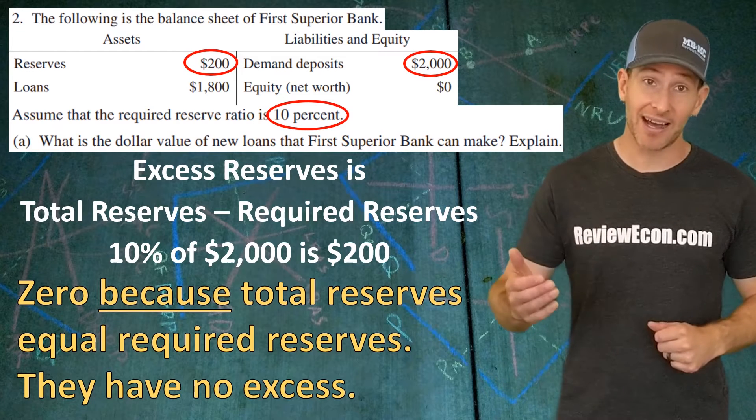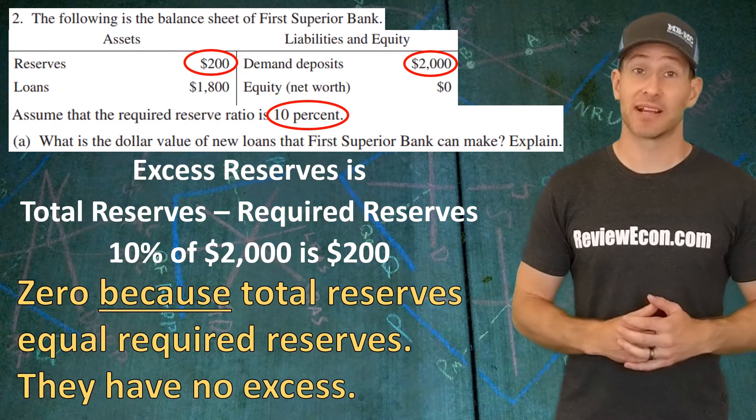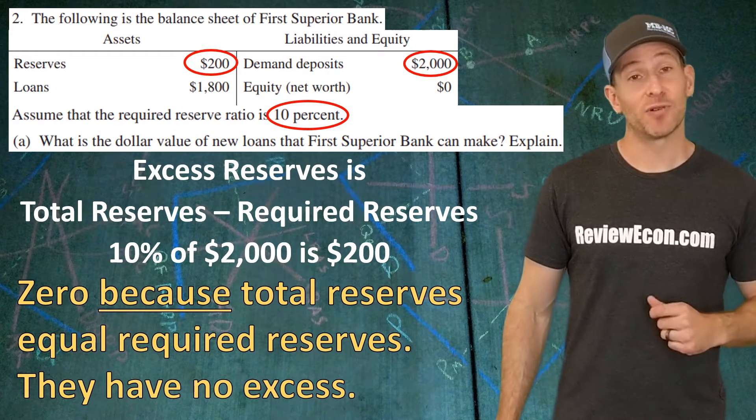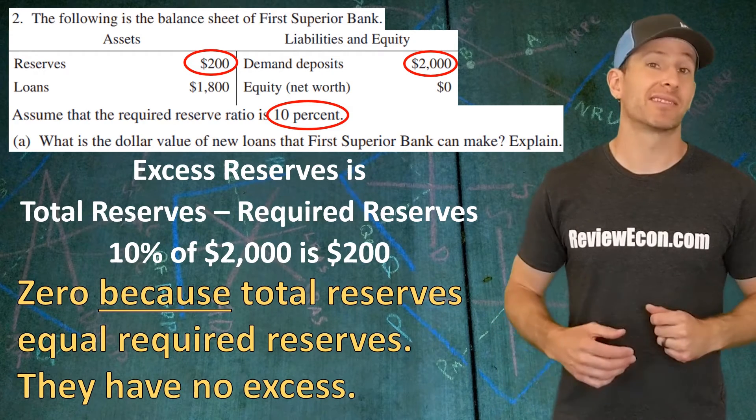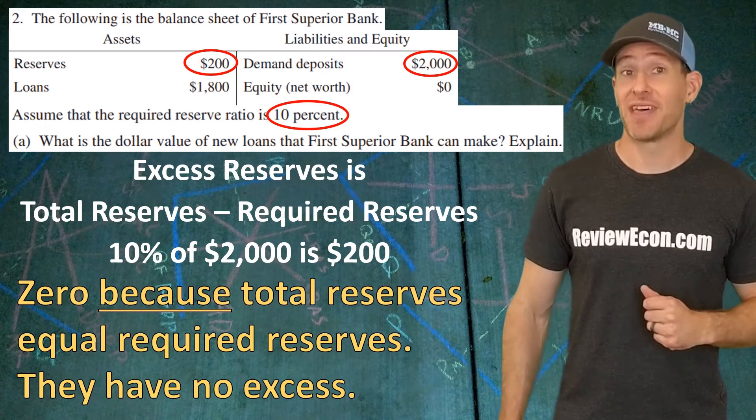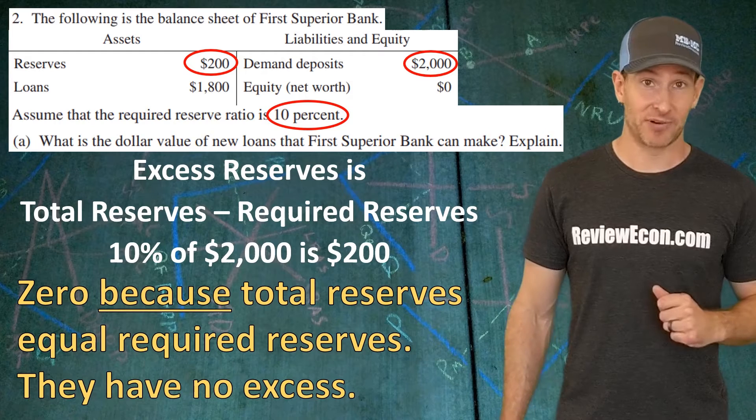So you have the answer here. It's zero because, and you have to say because here, because of the explained point here, total reserves equal required reserves. Or you could say there are no excess reserves. It might be even better to give that math that you just did. And that's how you're going to get this point.